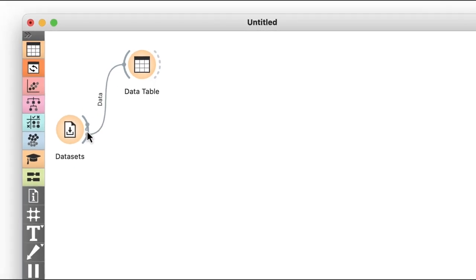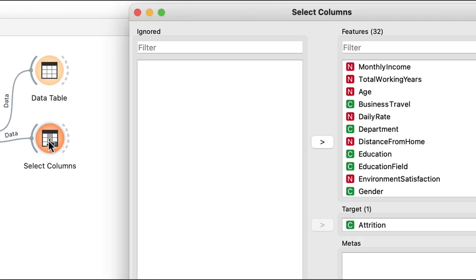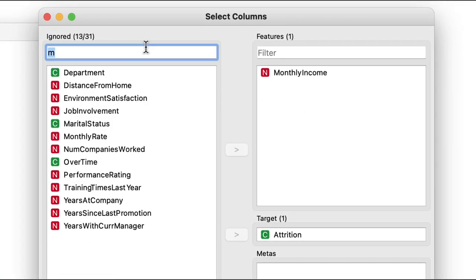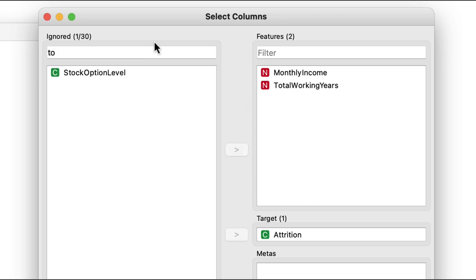Now to begin, I'll use only two features, monthly income and total working years. These two features have very different ranges of values. So for the purposes of our demonstration, I'll standardize them first using the pre-process widget.